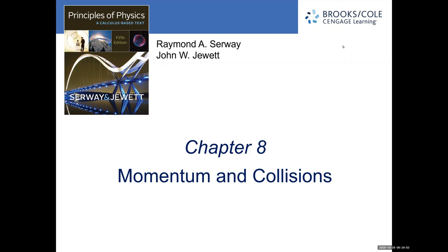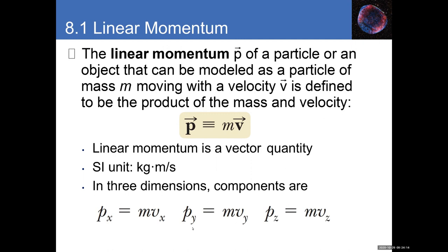This is Chapter 8, which is on momentum and collisions. In this chapter we're going to learn about a very important concept called momentum — specifically linear momentum. In Chapter 10 we will also learn about angular momentum. Linear momentum basically means we're still talking about an object that has, in a way, no size — like a particle — moving along more or less a straight line. That's why we call it linear momentum.